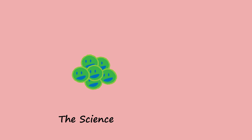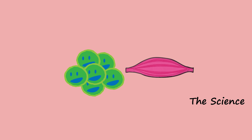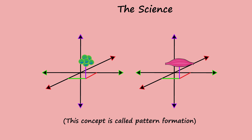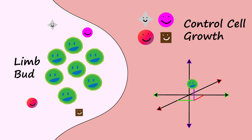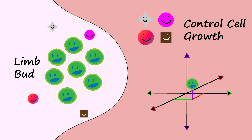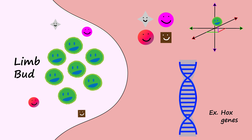The science behind limb development revolves around ensuring cells develop specific tissues at the correct locations. This is done via molecules in the limb bud, which control cell growth and developmental location on the three axes by interacting with special genes in their DNA.